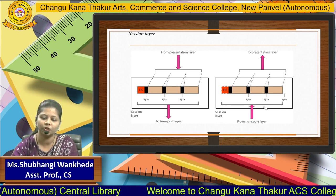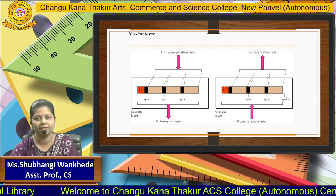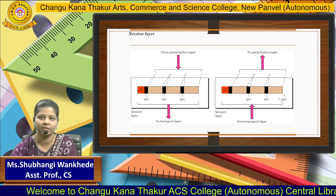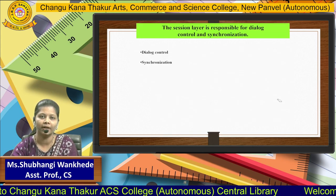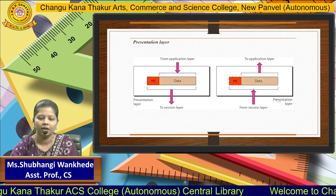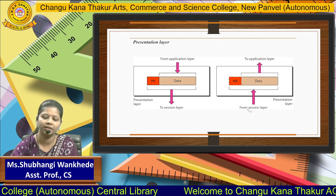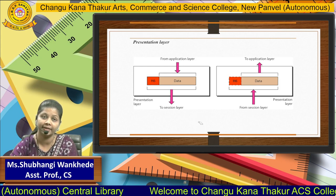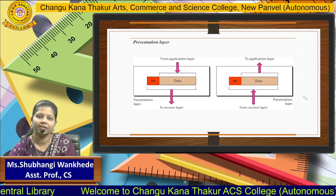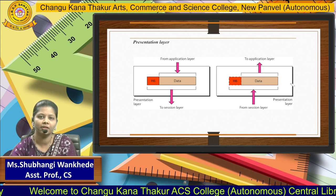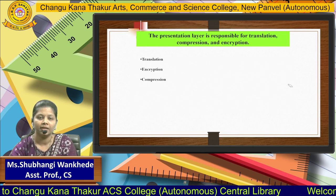In the session layer, data is received from the presentation layer and given to the transport layer at the sender side, and vice versa at the receiver side. Its responsibilities include dialog control and synchronization. In the presentation layer, data is obtained from the application layer and sent to the session layer at the sender side. At the receiver side, the session layer gives data to the presentation layer, which then passes it to the application layer. The responsibilities of the presentation layer are translation, encryption, and compression.